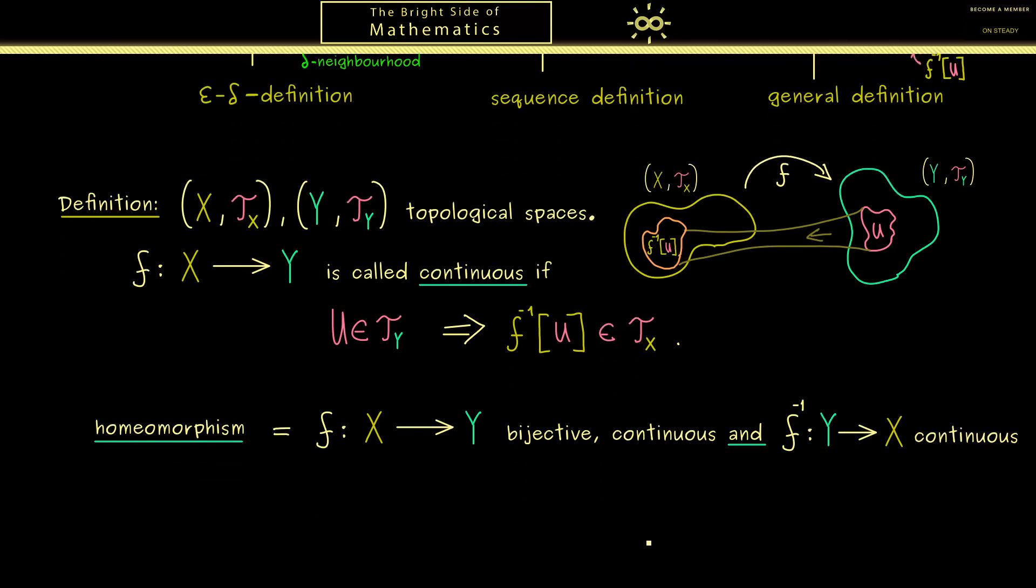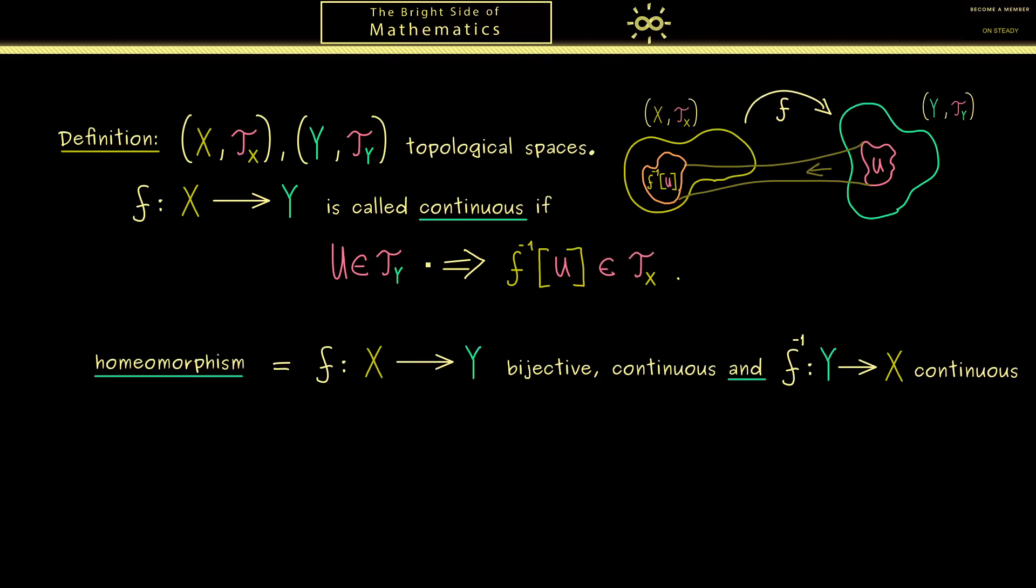Then I would say let's look at some simple examples of such continuous maps. They are simple but they are also important to know. The first one comes in when we take the indiscrete topology on Y. Please recall this means only the empty set and the full space Y are open sets.